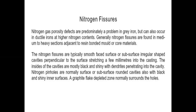The nitrogen fissures are typically smooth-faced surface or subsurface irregular shaped cavities perpendicular to the surface, stretching a few millimeters into the casting. The insides of the cavities are mostly black and shiny with dendrites penetrating into the cavity.